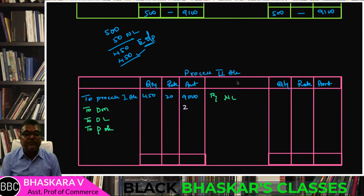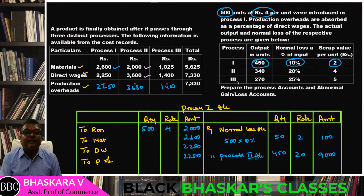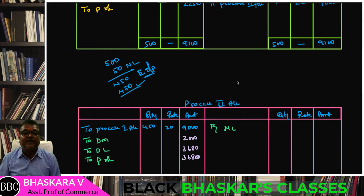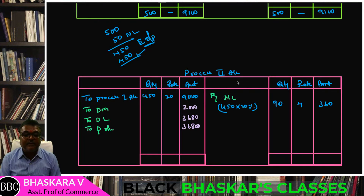For Process 2: direct material is ₹2,000 + ₹3,680 = ₹3,680. Output is 340 units. Normal loss is 20% of 450 units = 90 units. Scrap sale at ₹4 per unit = ₹360.